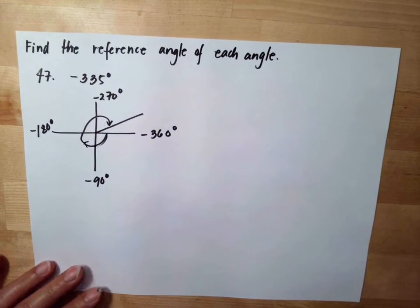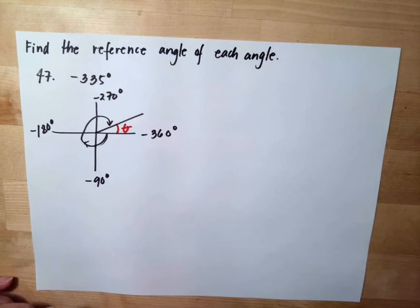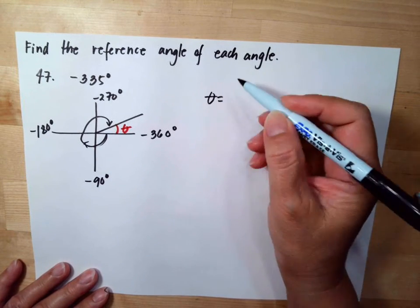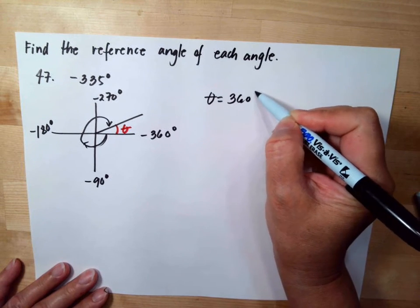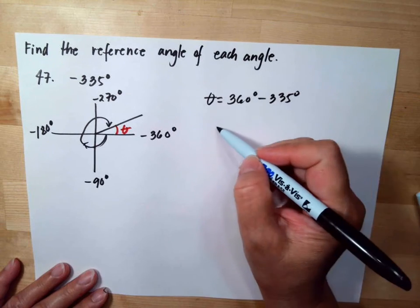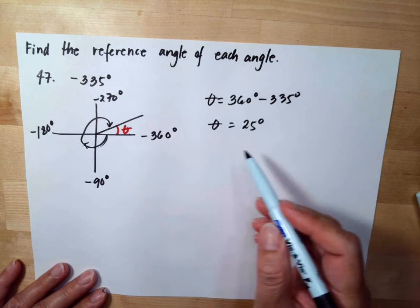Now if it is a negative angle, we still subtract or add 360. So negative 335 degrees plus 360, so our angle will be equal to 25 degrees. So the reference angle is equal to 25 degrees.